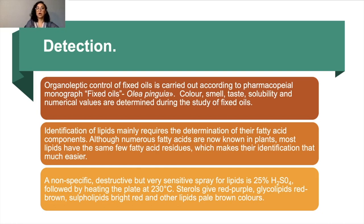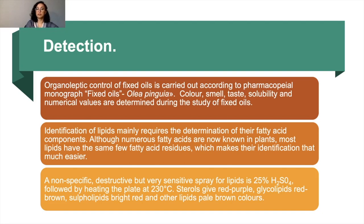Detection of lipids is carried out according to the pharmacopoeia monograph called fixed oils. Color, smell, taste, solubility, and numerical values are determined during the study of fixed oils. Identification of lipids mainly requires the determination of the fatty acid component. Although numerous fatty acids are known in plants, most lipids have the same few fatty acid residues, which makes identification easier. A non-specific but very sensitive spray for lipids is 25% sulfuric acid, followed by heating the plate. Sterols give a red-purple color, glycolipids red-brown, sulfa-lipids bright red, and other lipids pale brown.